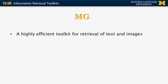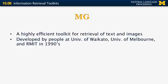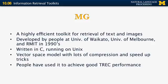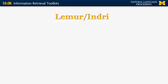MG is a highly efficient toolkit for retrieval of both text and images. It was developed in the 1990s by people at the universities of Waikato, Melbourne, and RMIT in Australia. It's also written in C and is based on the vector space model, but uses many tricks for efficient compression and data representation. It has also achieved good TREC performance.